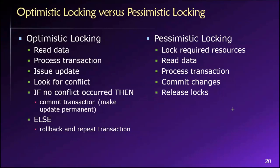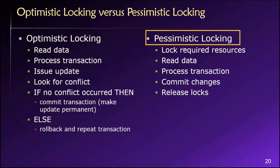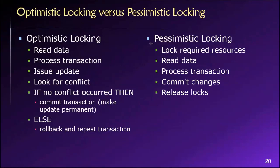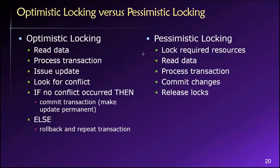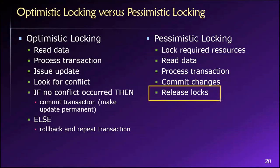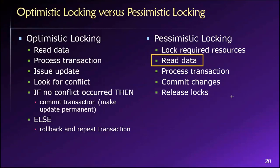With the pessimistic locking strategy, from the outset we are assuming that a conflict will occur. So to prevent that conflict, we lock the resources we need at the beginning, do everything we need to do, save our changes, and then unlock them. Keep in mind that while these resources are locked, no one else can use them — they can't even read them, so they have to wait.